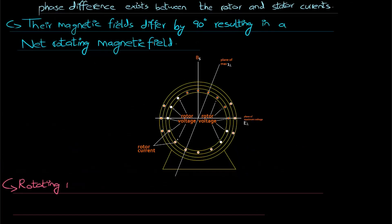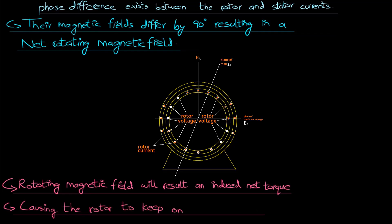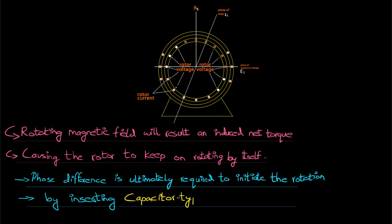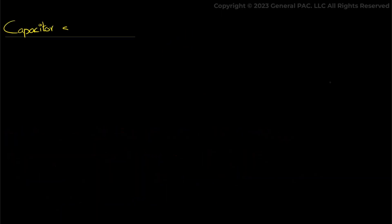So this rotating magnetic field will result in an induced net torque being produced causing the rotor to keep rotating itself. So what we conclude here from this theory is that a phase difference is ultimately required to initiate the rotation of our motor. This can be brought by inserting a capacitor type winding. And this principle is used in a single phase capacitor start motors in the following way.